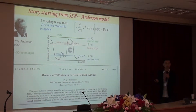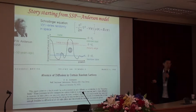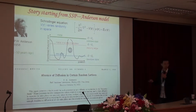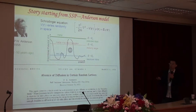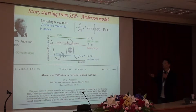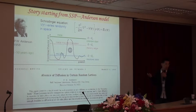In 1958, Anderson wrote a famous paper on the absence of diffusion in disordered lattices. In this paper, he introduced disorder into the tight-binding model and showed that introduction of disorder leads to a localization-to-delocalization transition. Years later, Mott proposed a concept called the mobility edge: when the Fermi energy of electrons is lower than the mobility edge, it will be in the insulating phase; when it is larger, it will be in the metallic phase.